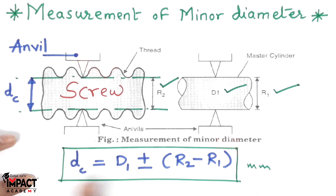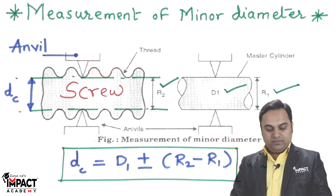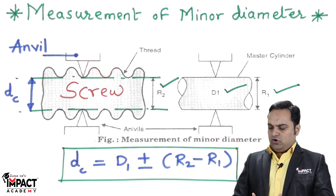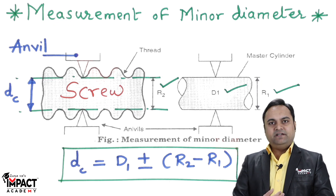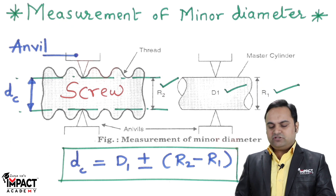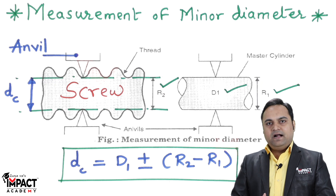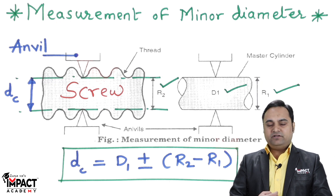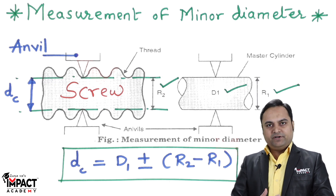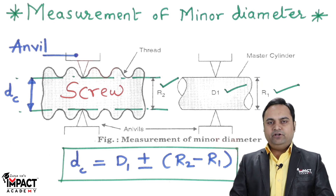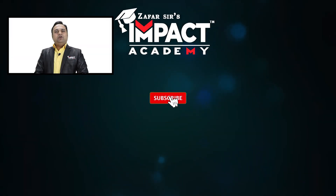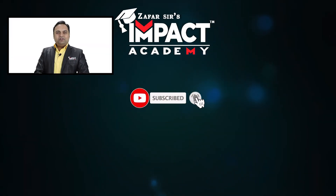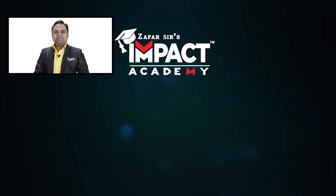As we have seen, a lot of setting and adjustment is required to measure the minor diameter with the floating carriage micrometer. This process takes a lot of time and requires a skilled operator to take accurate readings. That was the video regarding the measurement of minor diameter. If you find my videos helpful, please like, share, comment, and subscribe to our channel and share it with your family and friends. Thanks for watching.